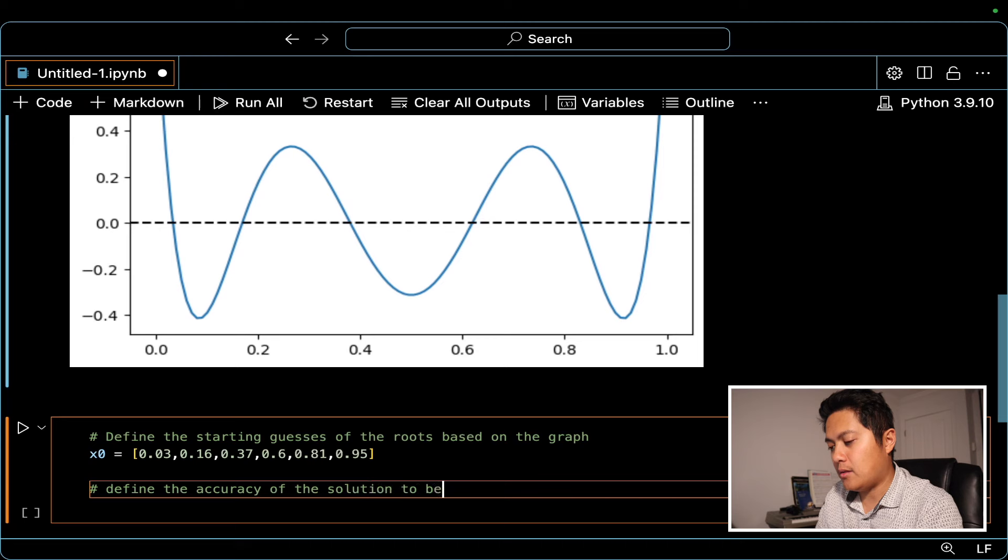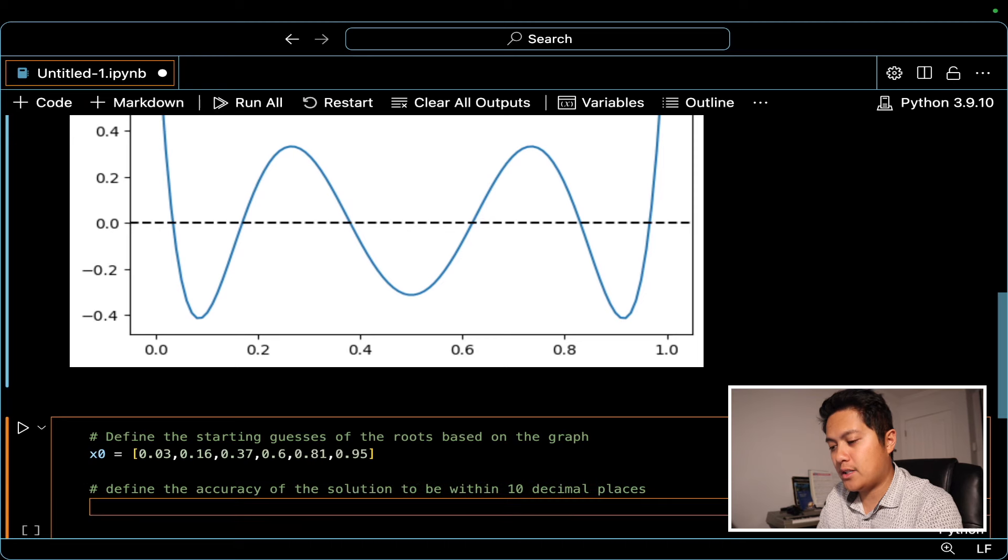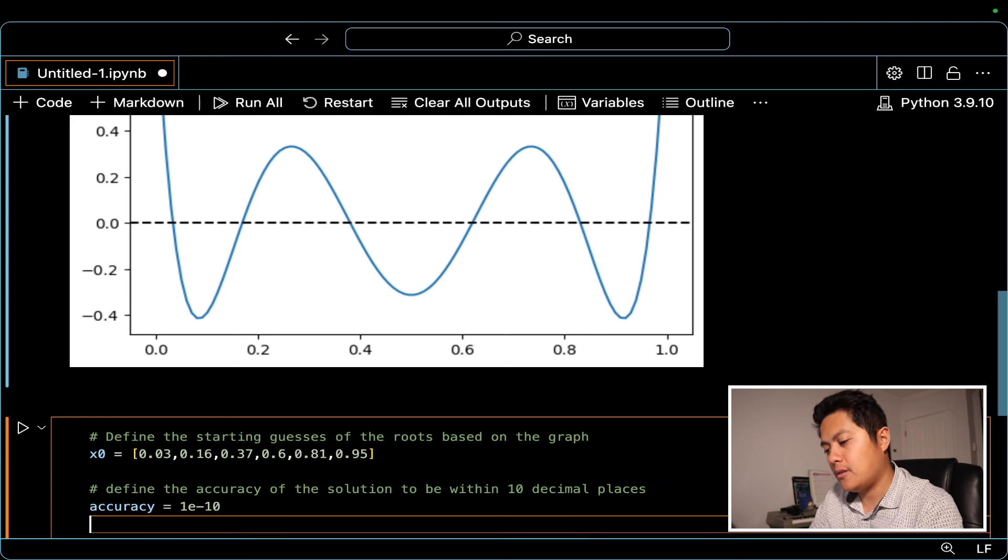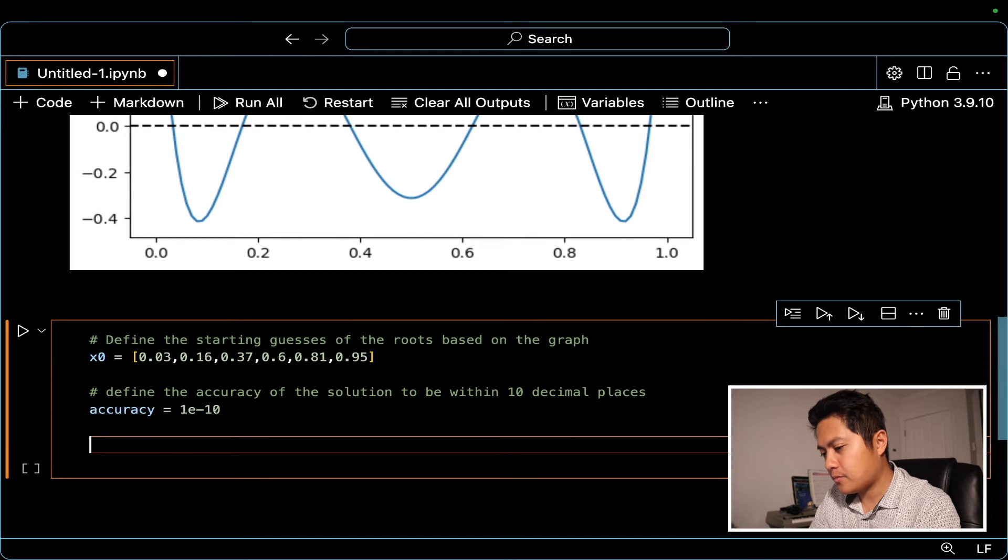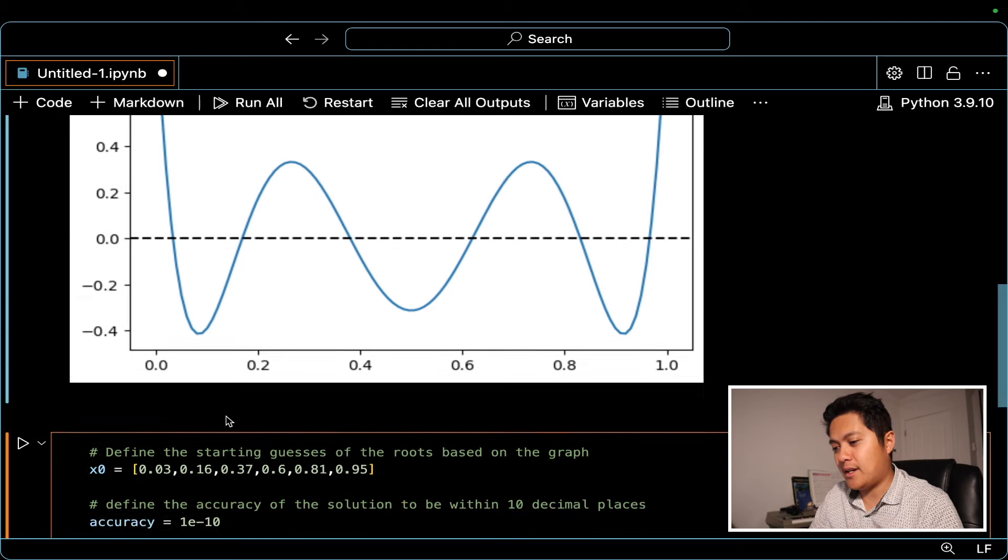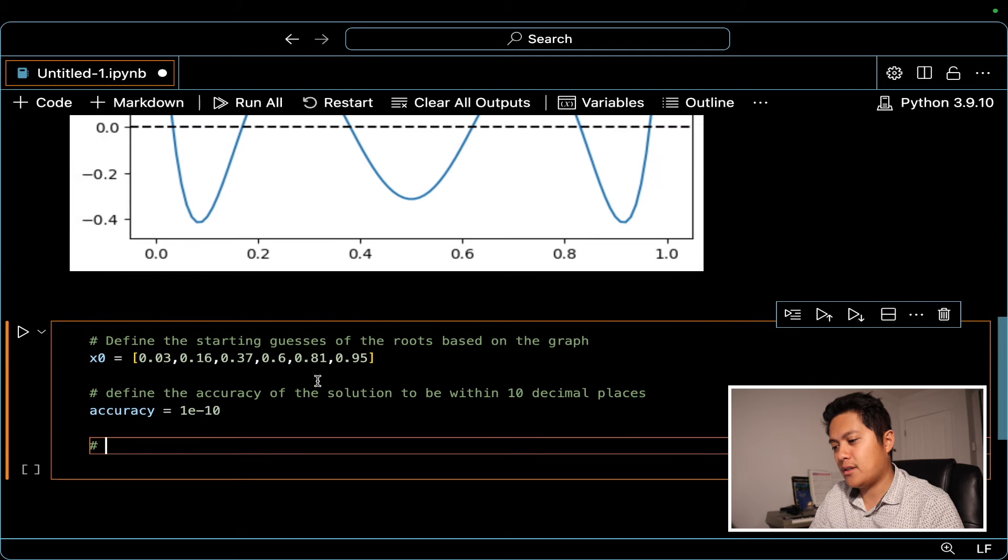So we're going to define the accuracy of our solution to be within, let's say 10 decimal places. So we want the accuracy or the tolerance to be about 1 times 10 minus 10.